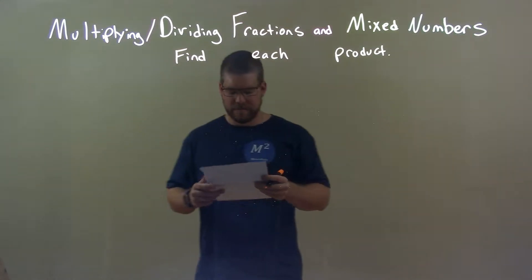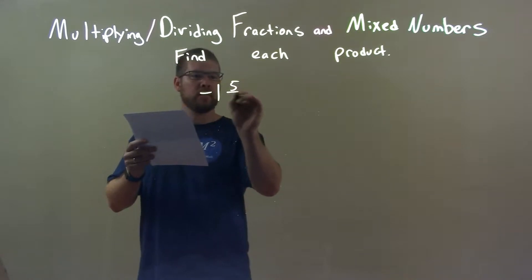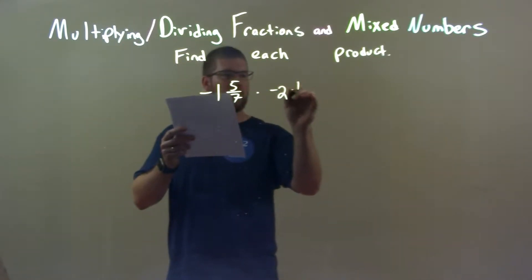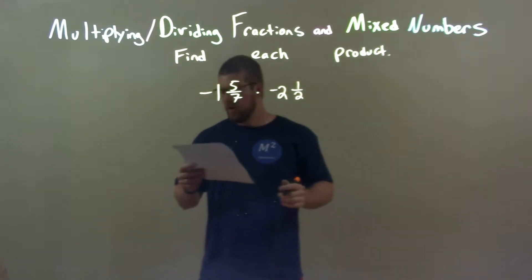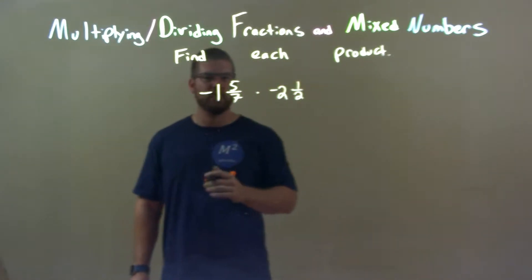So, if I was given these numbers, negative 1 and 5 sevenths times a negative 2 and 1 half, okay? Well, first thing, I'm going to convert each one of these to an improper fraction.